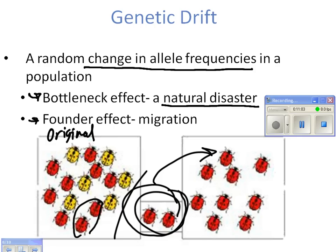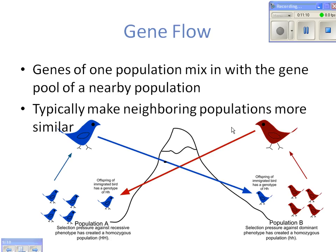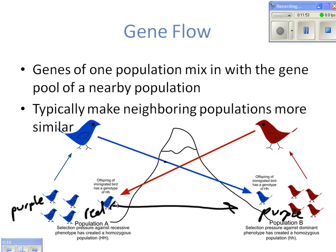Gene flow is when two populations basically share their genes in the gene pool. A red bird flies over a mountain and mixes its genes with a blue bird population, so now you have some blue and some red birds, and you might end up with a purple bird. Then a blue bird comes over to the red population and mixes in. Gene flow is the mixing of two populations' genes, and it typically makes each population more similar to one another.